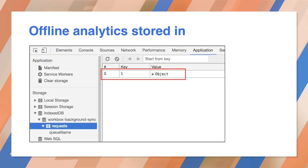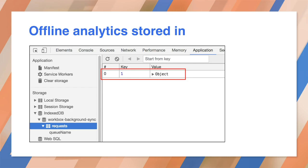You can test this behavior by enabling offline mode in developer tools and then triggering Google Analytics hits on your app. IndexedDB will show a list of URLs that represent the unsent hit requests. You may need to click the refresh icon inside the IndexedDB interface to see them. If you disable offline mode and refresh the page, you should see that the URLs are cleared, indicating that they have been sent.